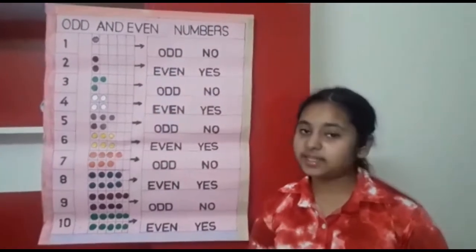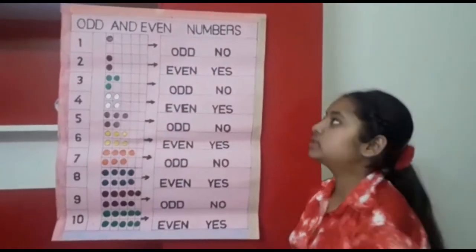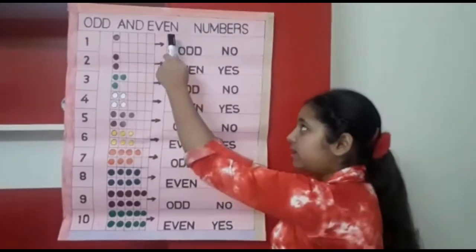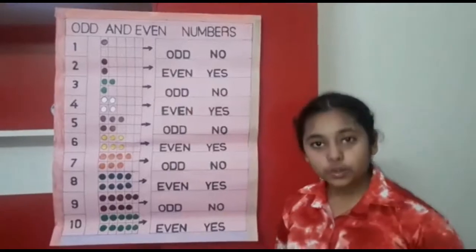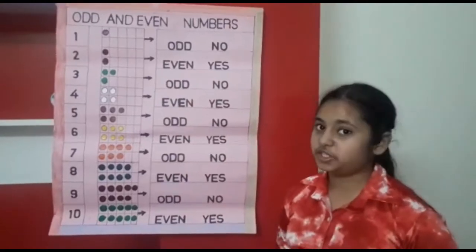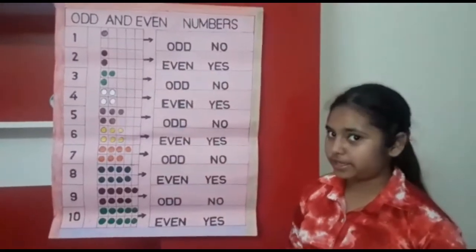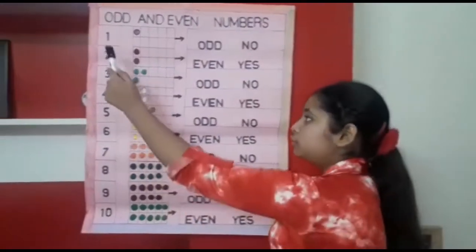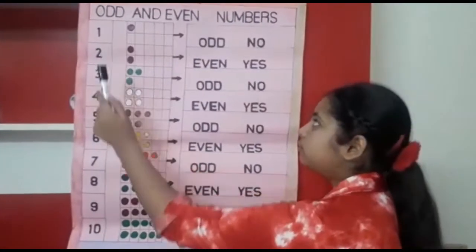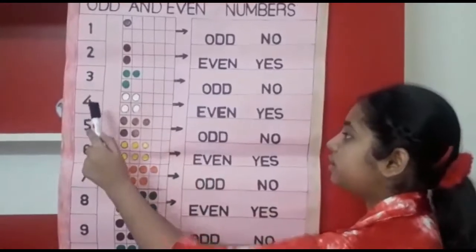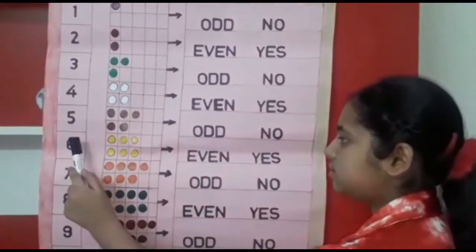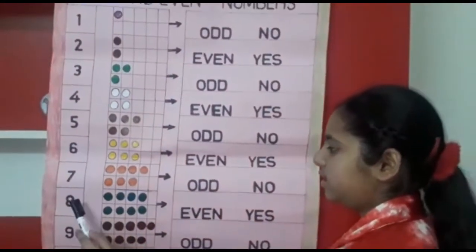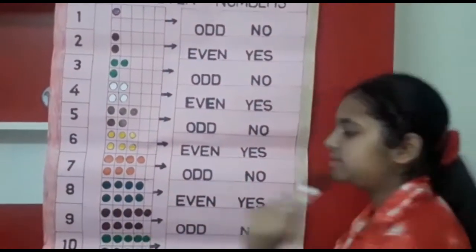Now, what is even numbers? Even numbers are those numbers which are divisible by 2. For example, 2, 4, 6, 8 and 10.